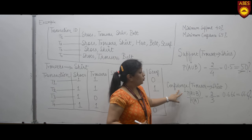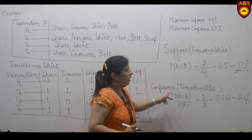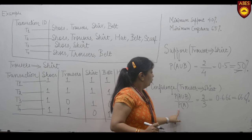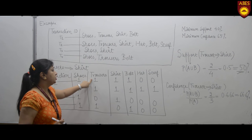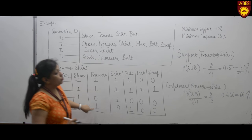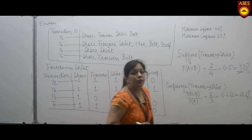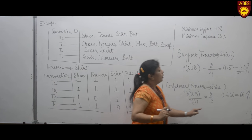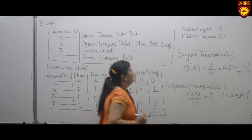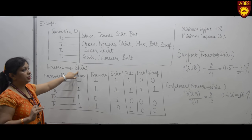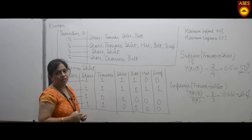To find confidence, we calculate probability of A union B divided by probability of A. We already know A union B = 2. A represents trousers, which appear in T1, T2, and T4 — so 3 occurrences. Confidence = 2/3 = 0.666, or 66.6%. Comparing this with the minimum confidence of 65%, it is greater, so we can say the association rule 'trousers implies shirt' is an interesting rule. Similarly, we can evaluate any pair of items.